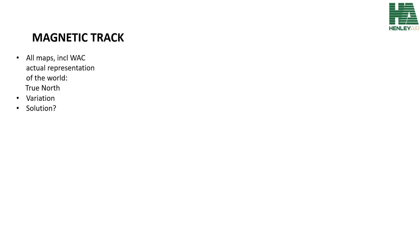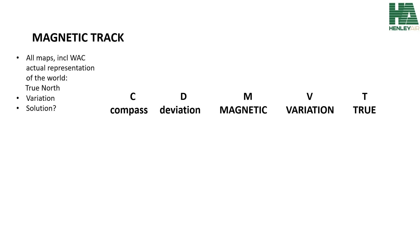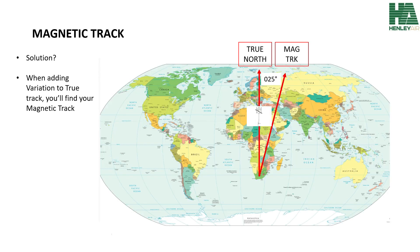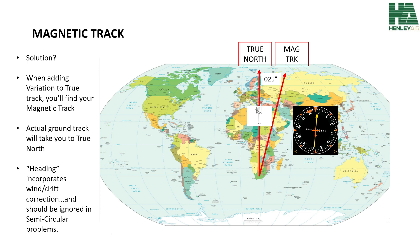The solution is to incorporate variation into our calculations. The least rude acronym to remember this by is Cadbury's Dairy Milk, Very Tasty. Another saying to remember is: variation west, magnetic is best; variation east, magnetic is least. Meaning that if you want to fly to the north pole on a true track of 000 degrees, you need to add variation to find your magnetic track. So when you add your variation to the true track, you will find your magnetic track. In this case, if you fly on your compass 005 degrees, you will eventually reach the north pole. Note that heading incorporates wind and drift correction, which should be ignored in semi-circular rule problems.